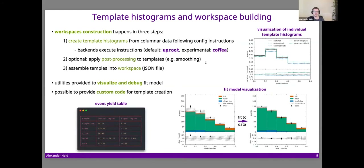When a configuration is available, creating a workspace happens in three steps. First, cabinetry determines which template histograms are needed and sends instructions to backends — by default using uproot, with experimental coffea support. There's an optional post-processing step, for example for additional smoothing. Finally, everything is assembled into a workspace using pyhf and serialized as a JSON file, with visualization utilities available to ensure you're building the correct workspace.